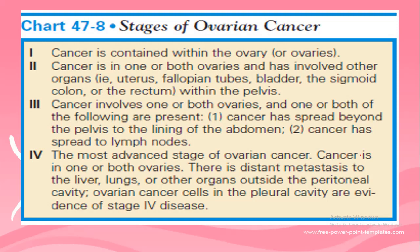For the stages of ovarian cancer: Stage 1 — cancer is only contained within the ovary. Stage 2 — cancer is in one or both ovaries and has involved other organs like the uterus, fallopian tubes, bladder, sigmoid colon, or rectum within the pelvis. Stage 3 — cancer involves one or both ovaries and has spread beyond the pelvis to the lining of the abdomen or to the lymph nodes.